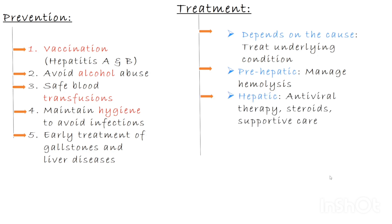In hepatic jaundice, where the liver itself is diseased, treatment targets the liver condition. For example, in viral hepatitis: antiviral drugs, rest, proper nutrition, and avoiding alcohol. In alcoholic liver disease: complete abstinence from alcohol and supportive care. In autoimmune hepatitis, immunosuppressive drugs such as steroids may be used.